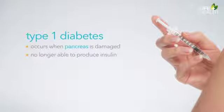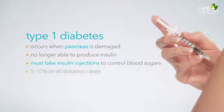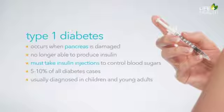People with type 1 diabetes must take insulin injections for the rest of their lives to control their blood sugars. Type 1 diabetes accounts for 5 to 10% of all diabetes cases, and it's usually diagnosed in children and young adults.